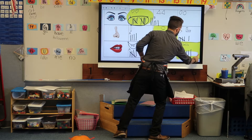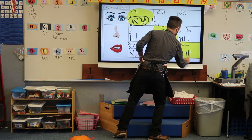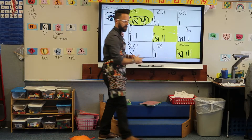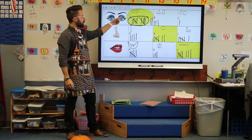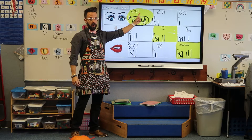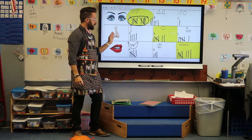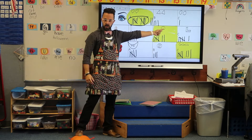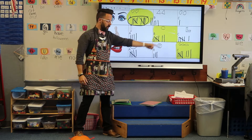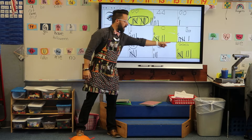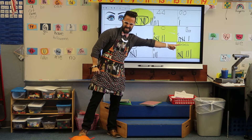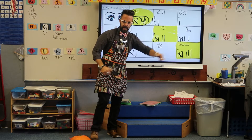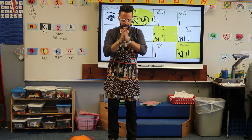So we, as a democracy in Mr. Rogers' class, have voted. The eyes will be hearts. The nose will be a circle. And the mouth will be angry. Awesome.